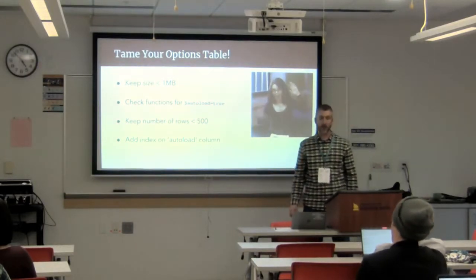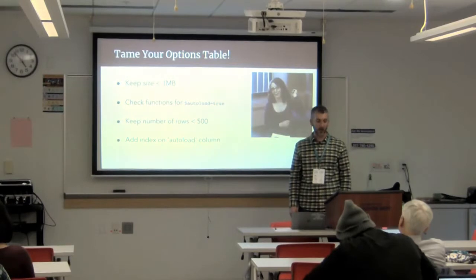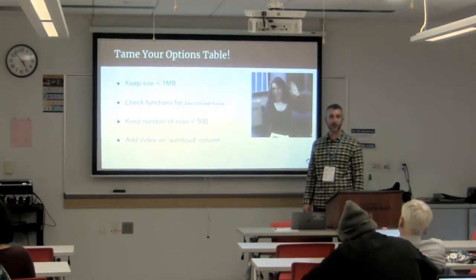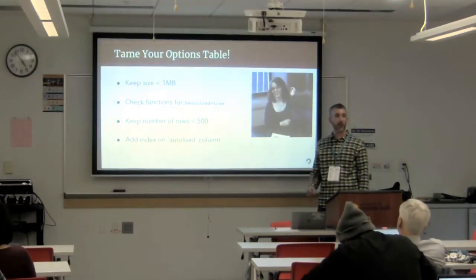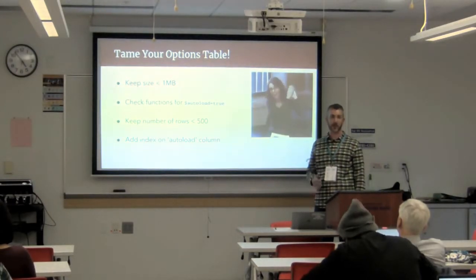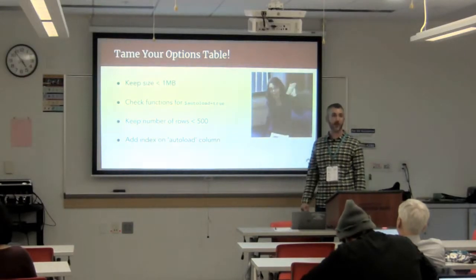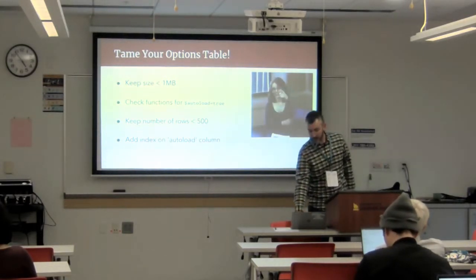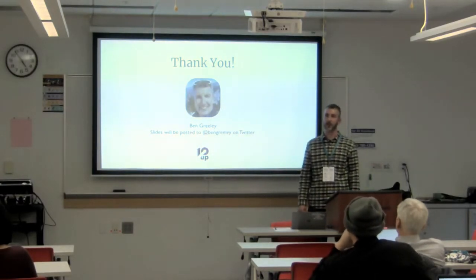To summarize: the best practice is to make sure your options table is less than one megabyte in size and to always monitor your website to ensure that. Be sure to check the functions in your PHP code to specify whether or not options should be autoloaded — that's something easily missed if you don't understand what the autoload parameter does. Keep the number of rows in the options table to less than 500. If you need to store a lot of data, you can, but you need to add an index on the autoload column.